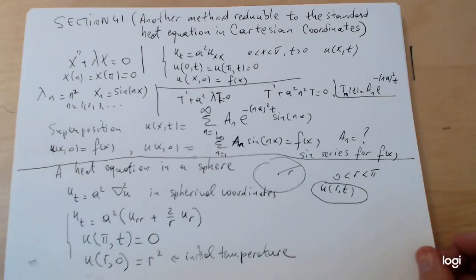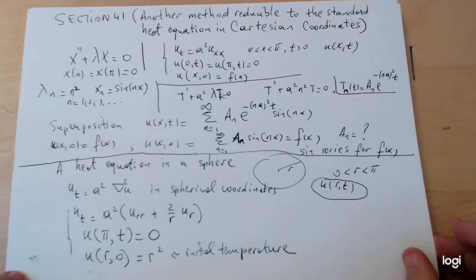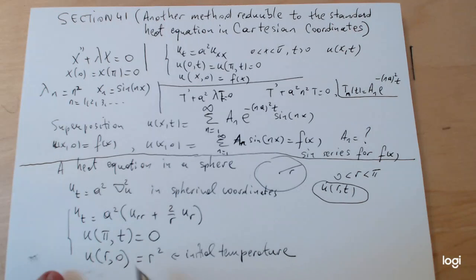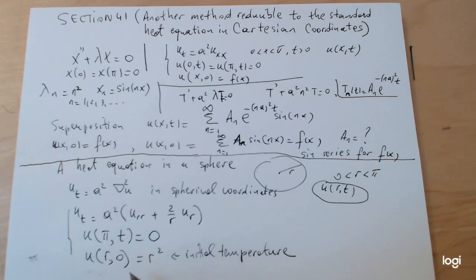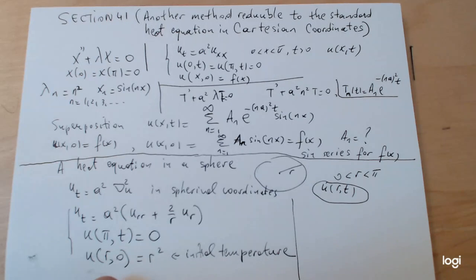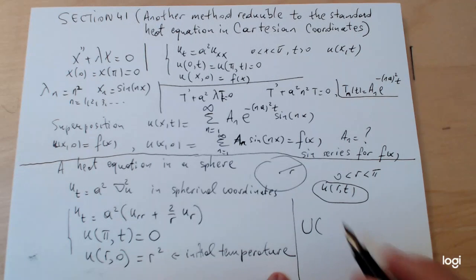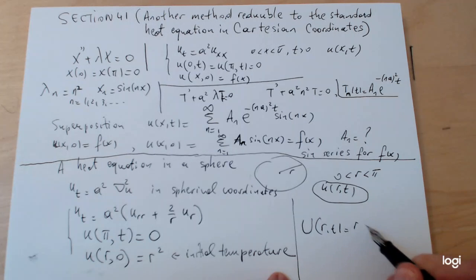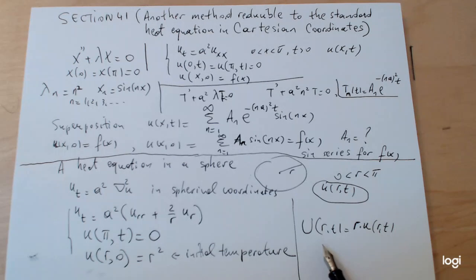The substitution is going to be, let's indicate this one here, and we're going to continue the whole lesson in a second part. But the substitution would be basically to take an associated function U(r,t) = r·u(r,t).